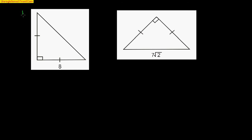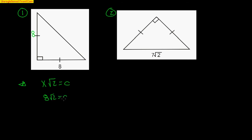Here are two examples. In the first one, we know that one of the sides is 8, so that means this side is also 8, and we're looking for the hypotenuse. Using that key formula, we're looking for C and we know X, the common side, is 8. So we get 8√2 equals the hypotenuse. Just like that, we're done.